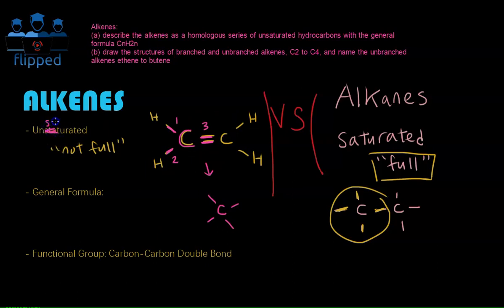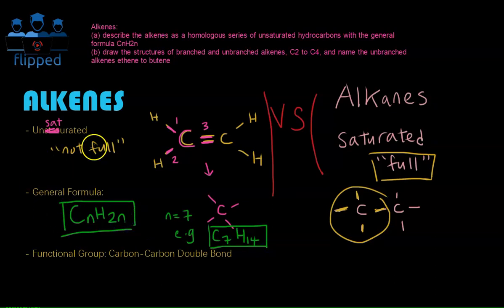That's what we mean by unsaturated. So that's why it's not full. And that's the difference between alkenes and alkanes. The general formula for alkenes is CnH2n. Remember we talked about this in the alkanes chapter. If you have, for example, n equals to 7, then you just have to sub it back in here. So it will be C7H7 times 2, which is 14. So this is an example of alkenes with its general formula of CnH2n.